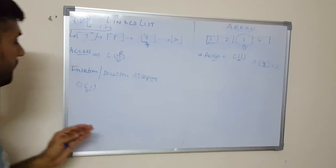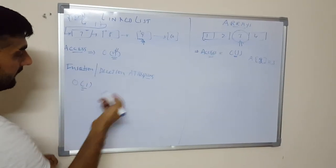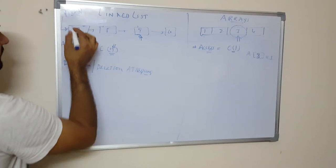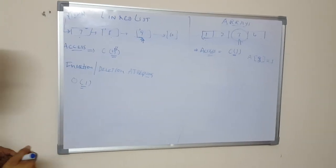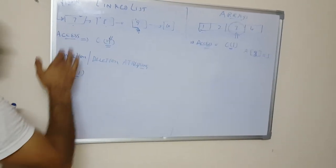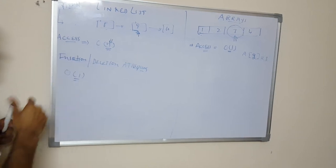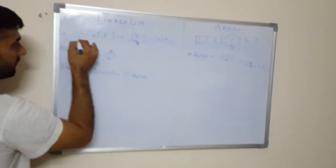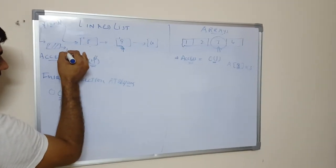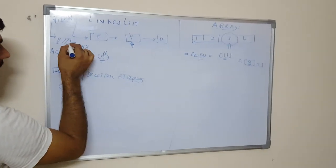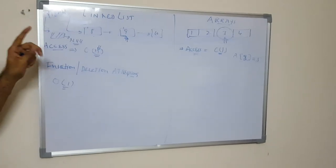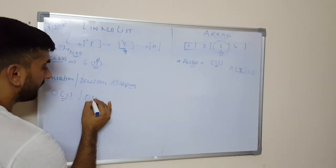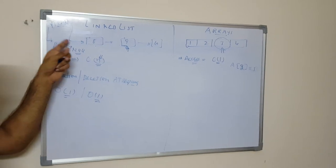Similarly, if you have to delete at the beginning of the linked list, the head node will point to the next node of the deleted node, and the next pointer of that deleted node will point to null. So again there are only two pointer update operations and you do not need to traverse the whole linked list. The time complexity will again come as O(1) because the operation is at the beginning of the linked list.